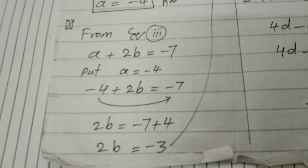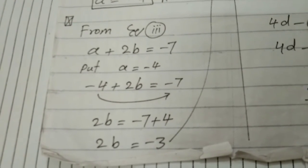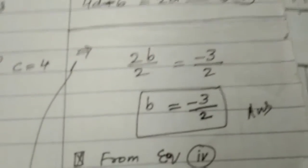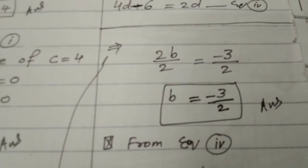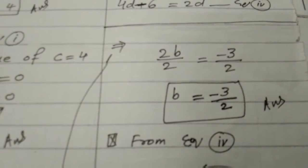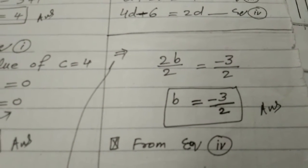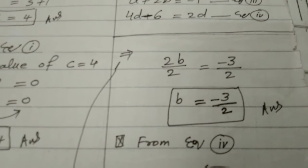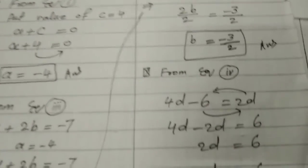So we get 2b is equal to minus 3. You can see this is an arrow line. Dividing both sides by 2. 2 crossing 2 from the side of b. So 2 and 2 cross to each other, cancel to each other, and we get b is equal to minus 3 over 2.